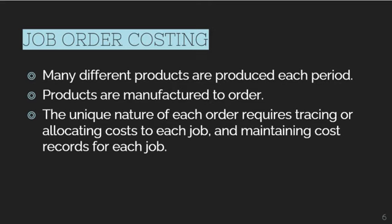We also have job order costing, which is quite different because many different products are produced in each period — not only one. Unlike Coca-Cola, which only produces bottled beverages, here products are manufactured to order. The unique nature of each order requires tracing or allocating costs to each job and maintaining cost records for each job.